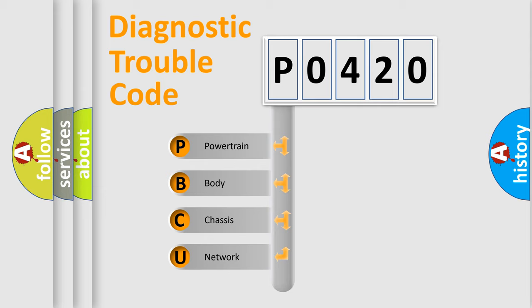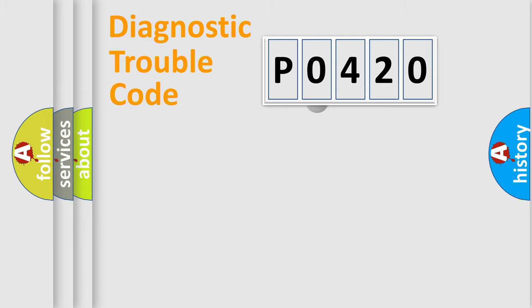We divide the electric system of automobile into four basic units: Powertrain, Body, Chassis, and Network. This distribution is defined in the first character code.